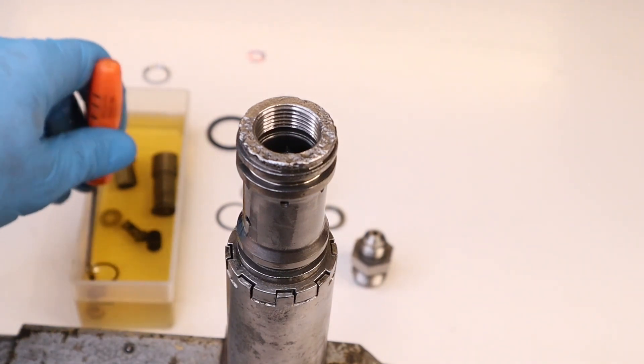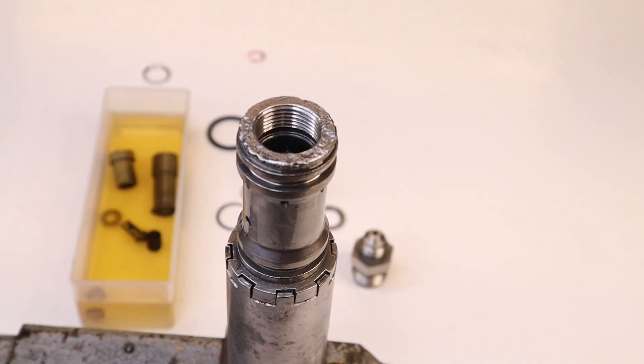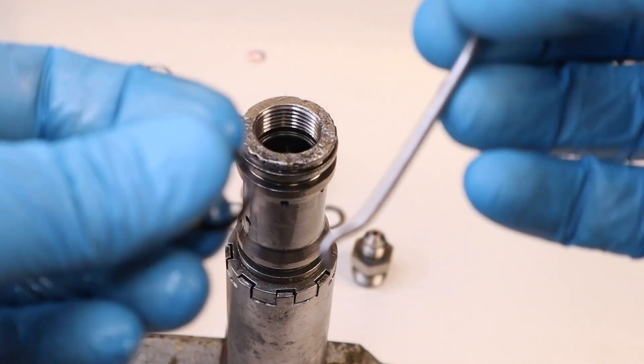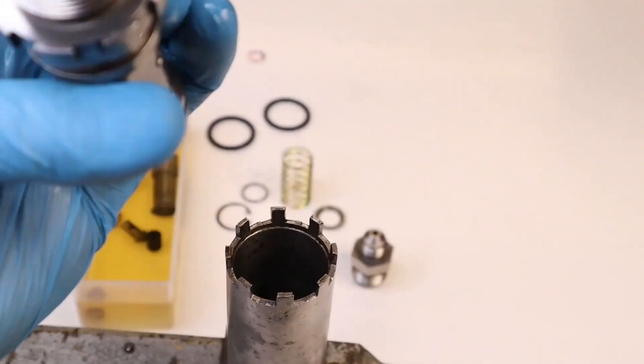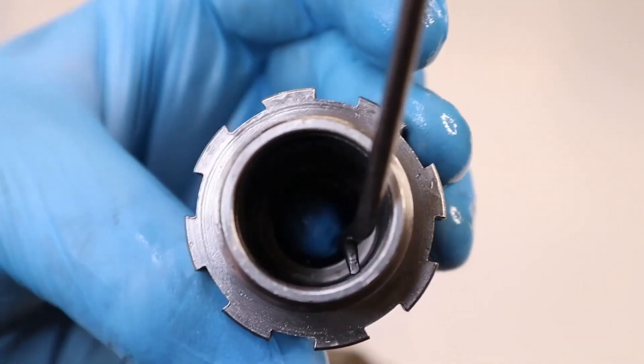So here's the brake pump housing in the brake pump tool. First thing to go in is the internal o-ring. This can be quite a fiddly job, particularly if you're trying to do it in front of the camera. It's got to go inside the internal groove.